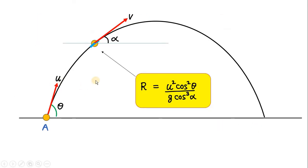We are going to prove that if a particle is thrown from the ground with initial velocity u making an angle theta with the horizontal, then at any general point where the velocity makes an angle alpha with respect to the horizontal, the radius of curvature of that small part of the parabolic path is given by: u squared cos squared theta divided by g cos cubed alpha.